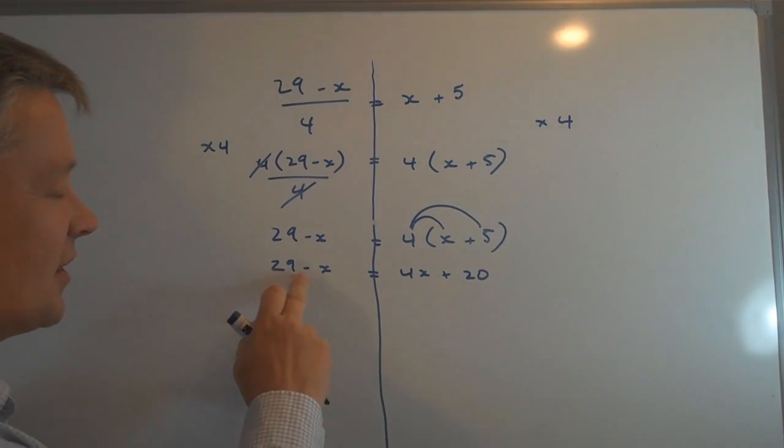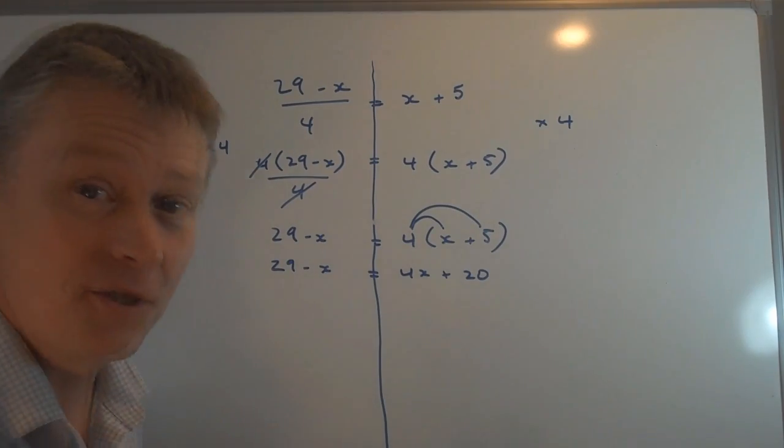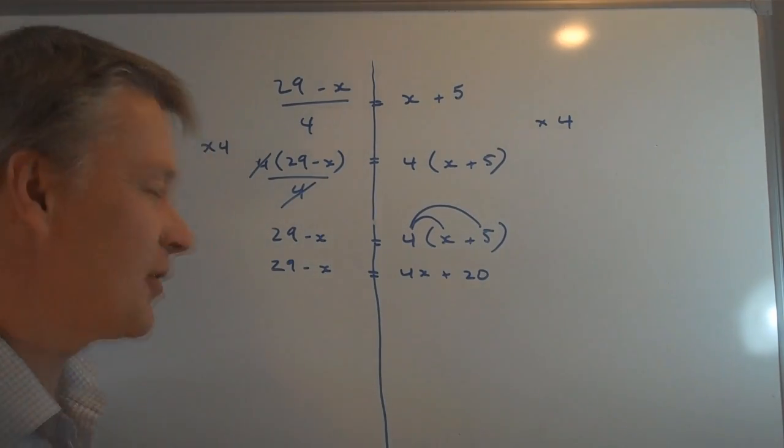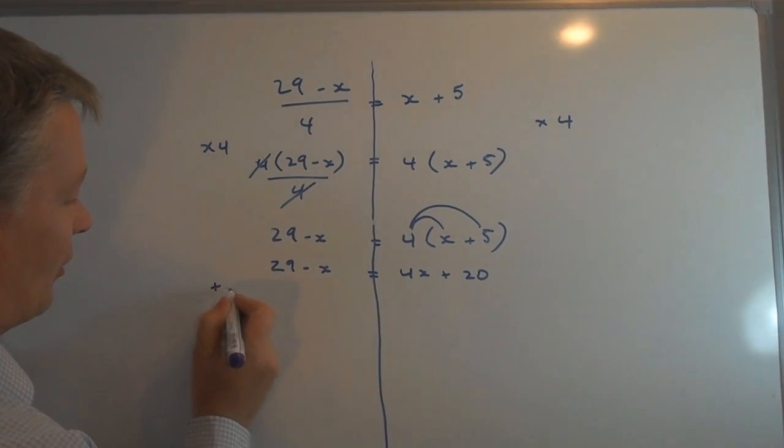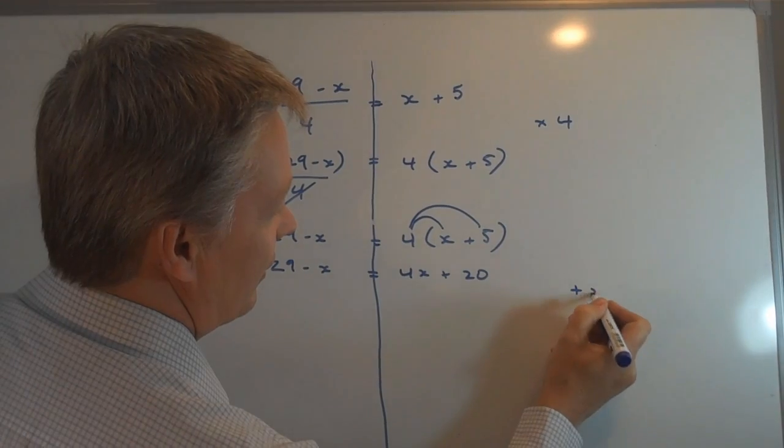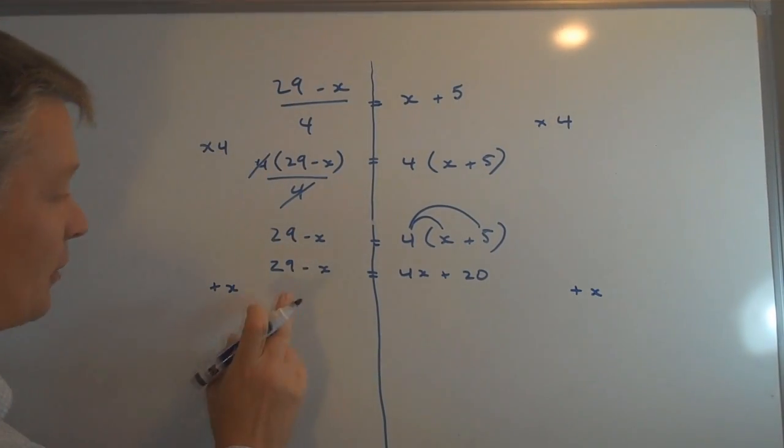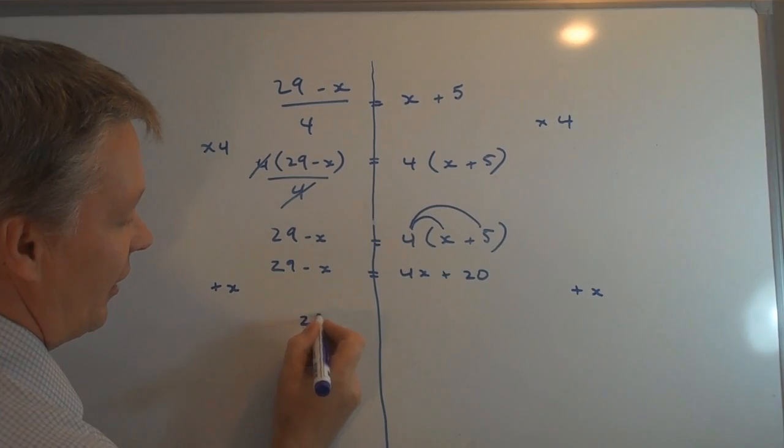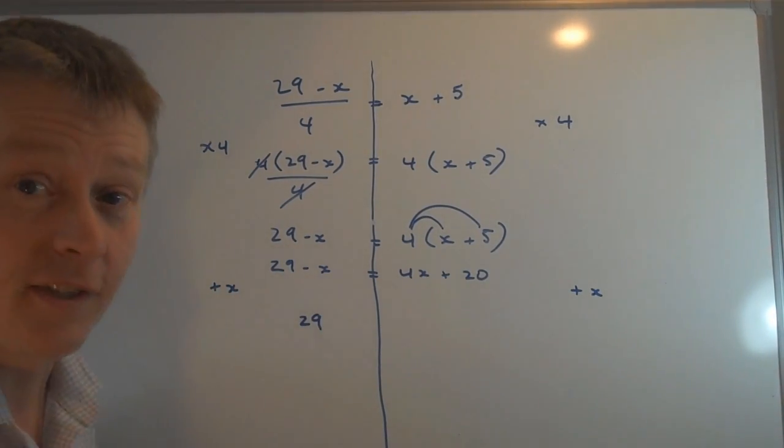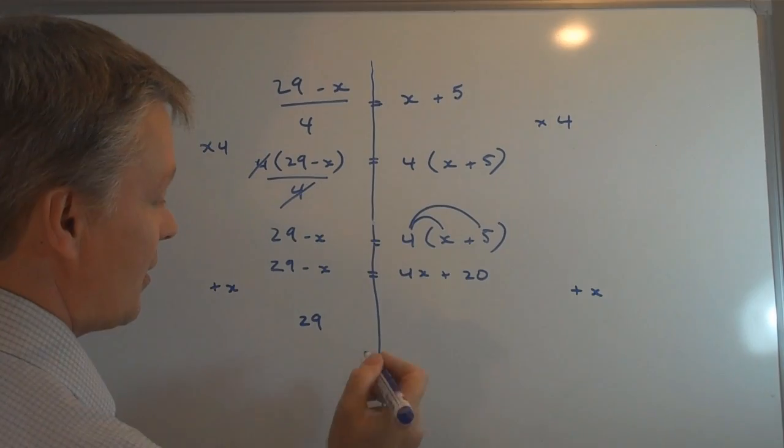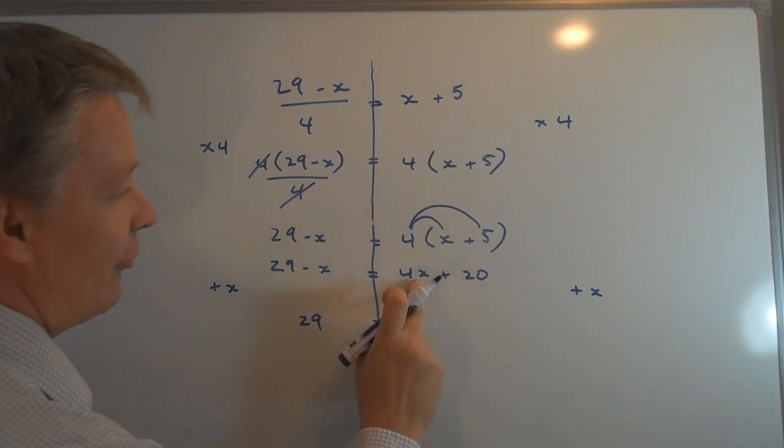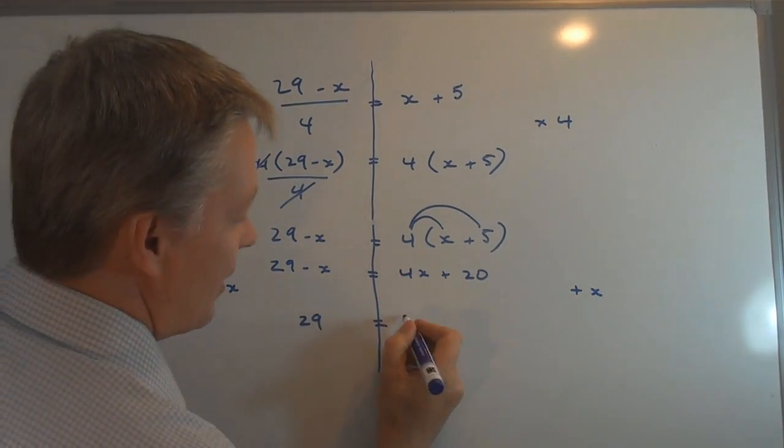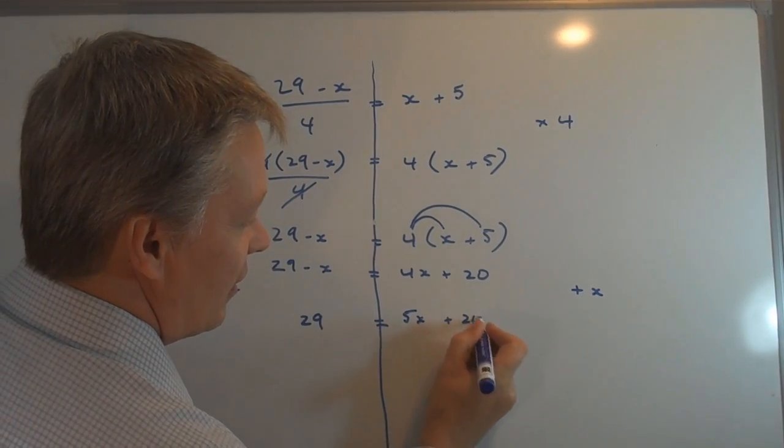So what I'm going to do is to get rid of this by adding x to both sides. And that just makes it perhaps a little bit easier in the calculation. So I'm going to tell the examiner what I'm doing by writing plus x both sides. And then I'm going to complete the calculation. So I've got 29 - x + x is 29 on its own. Because -x + x is 0, it cancels itself out, equals 4x + x is 5x + 20.